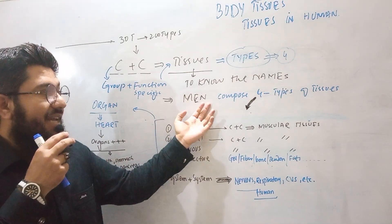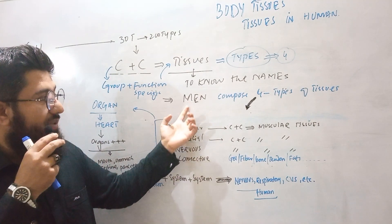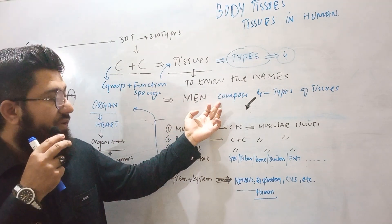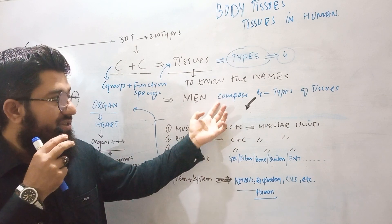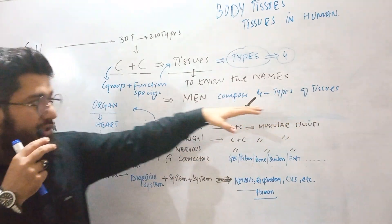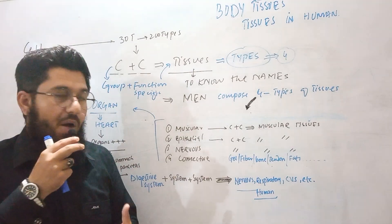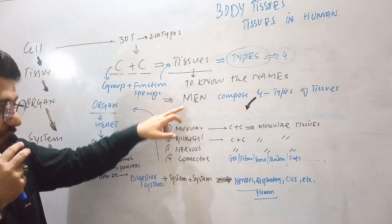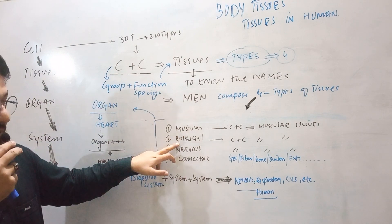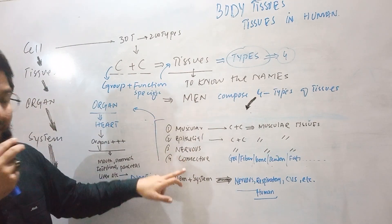From the word 'Men' — M, E, N — and along with 'Compose', just take C from 'compose'. So from this sentence, take M for muscular, E for epithelial, N for nervous, and C for connective. That gives you all four types of tissues.